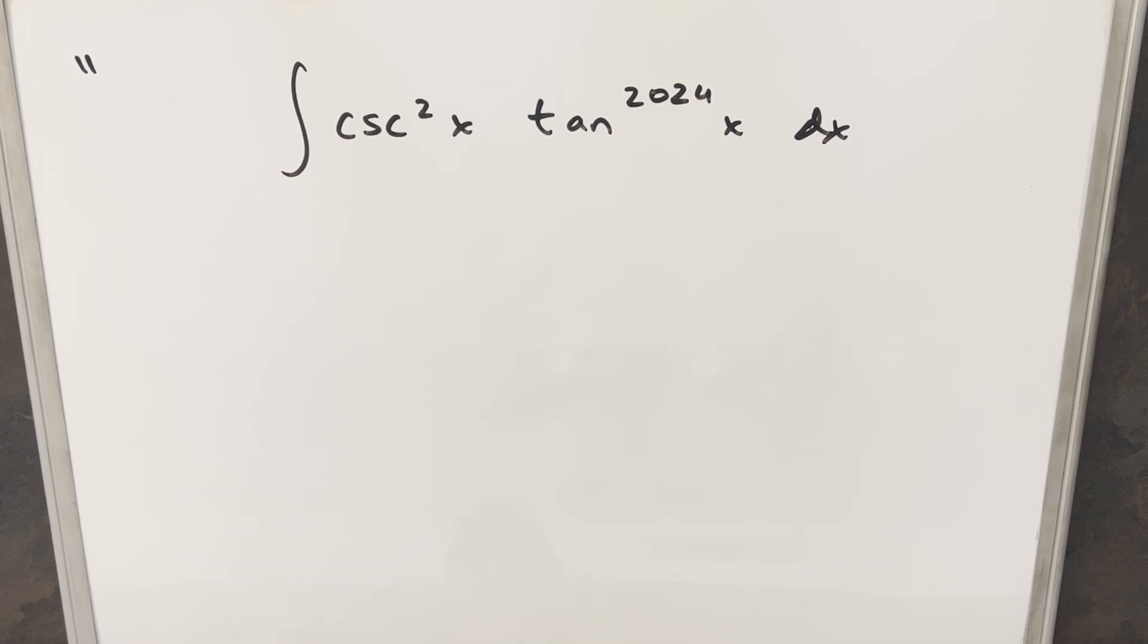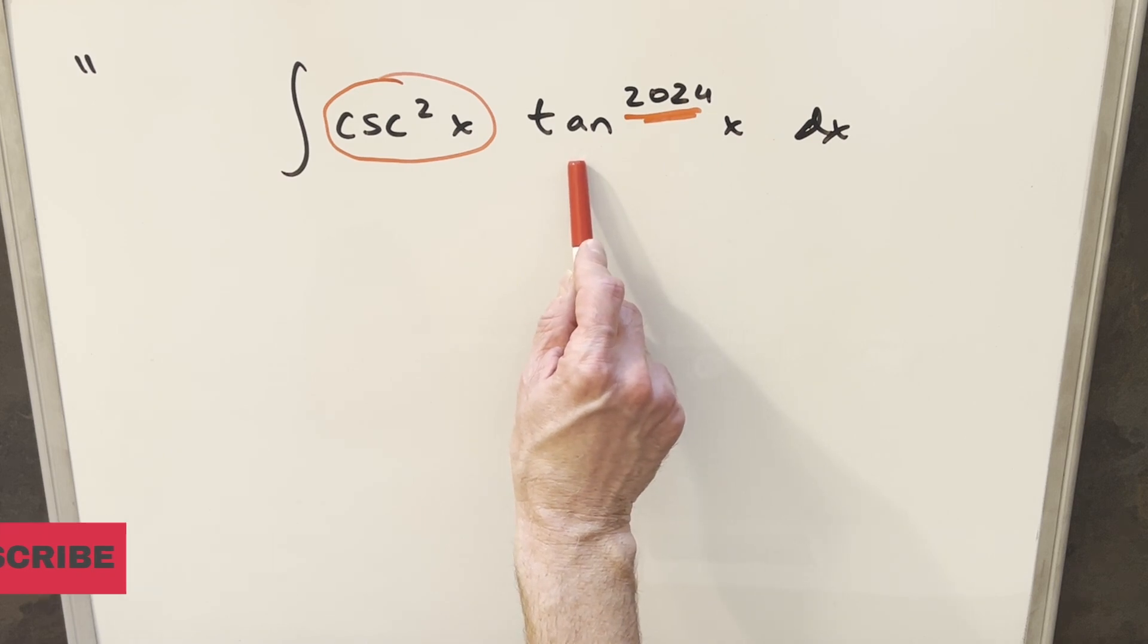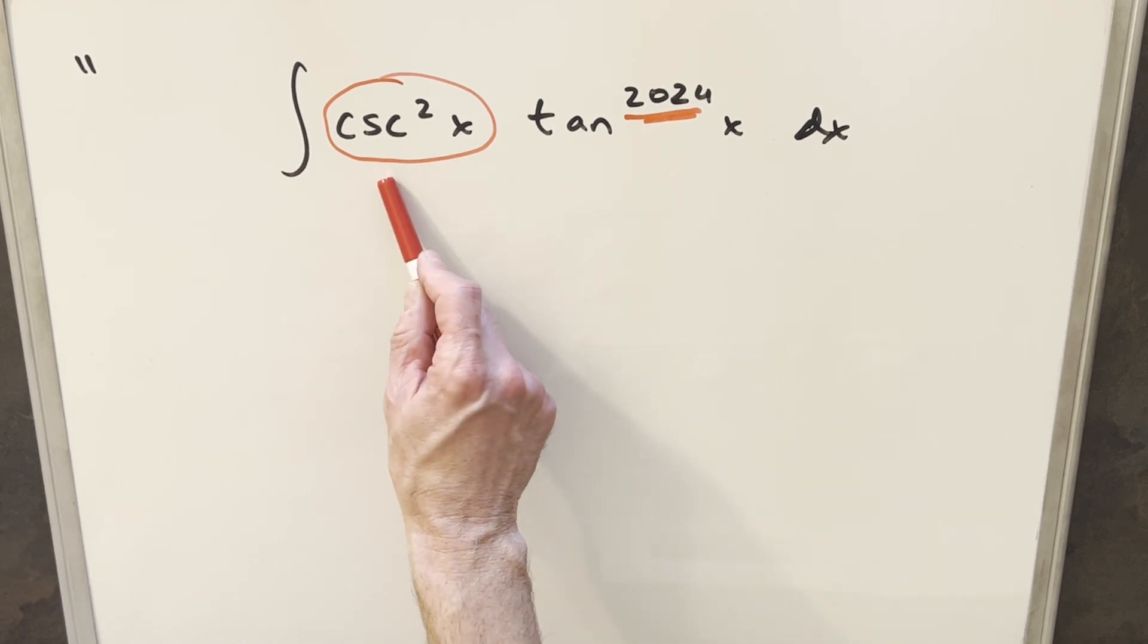I was really liking this one for a few different reasons. First of all, they managed to get the year in the problem, which is always important to me. But the other thing that was so interesting is they got a cosecant here. Now generally what we want is secant, but secant works well with tangent, and particularly if we were to do a u-substitution for tangent, the derivative of that is secant squared.